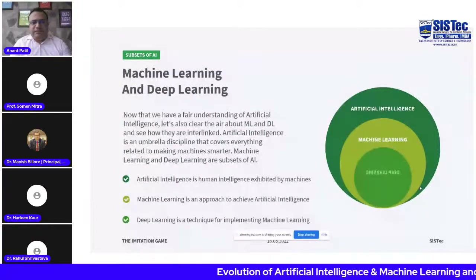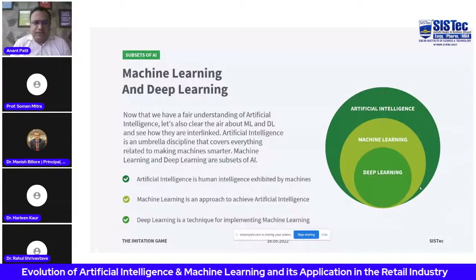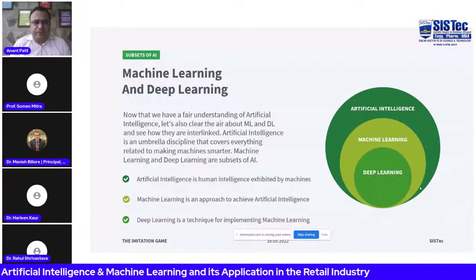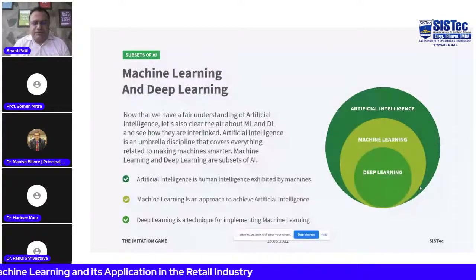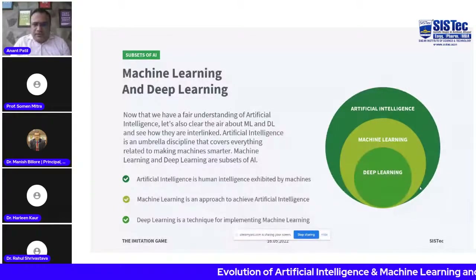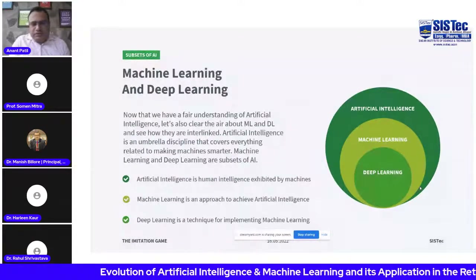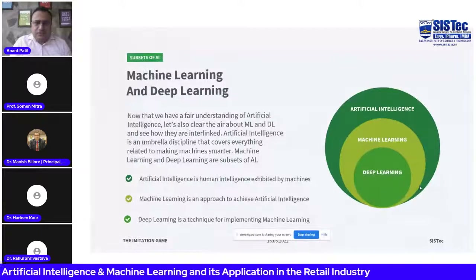Deep learning is a machine learning technique applied to large data sets. Deep learning processes information in the same manner as human brains do, and is used in technologies such as driverless cars.